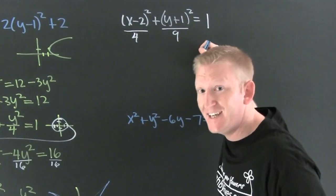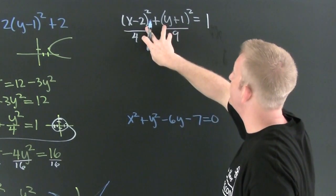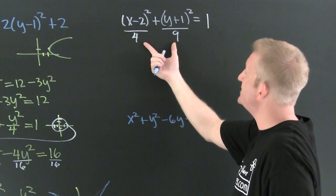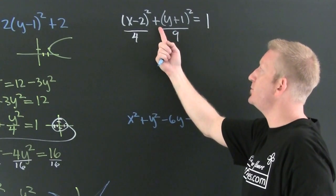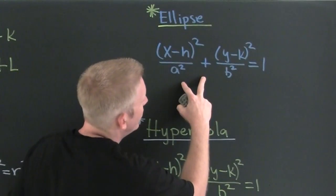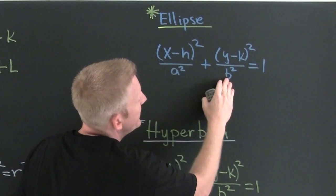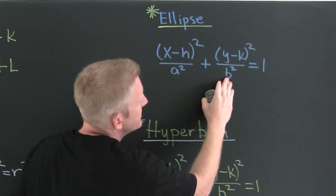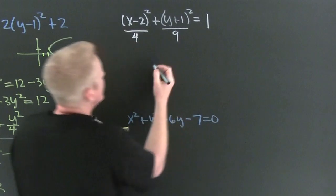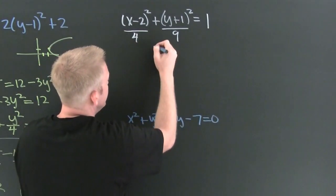Is it in standard form? Yes. Is it equal to 1? Yes. Are both variables squared? Yes. Are the denominators different? Yes. What's the sign in between them? Plus. Which one is that? The ellipse is the one where both variables are squared, the denominators are different, and there's a sum. It is an ellipse — and it's been shifted.